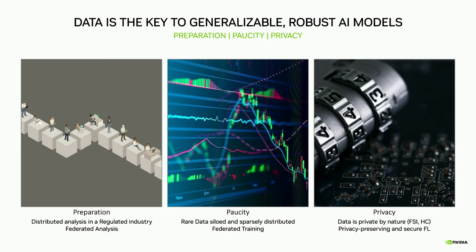When we talk about data, it has some kind of properties. Sometimes a different location has different data, or a different machine generates a different type of data. In medical imaging, sometimes we see Siemens CT generates a slightly different image dynamic range compared to GE. So sometimes we need to consider training on data from different sources.